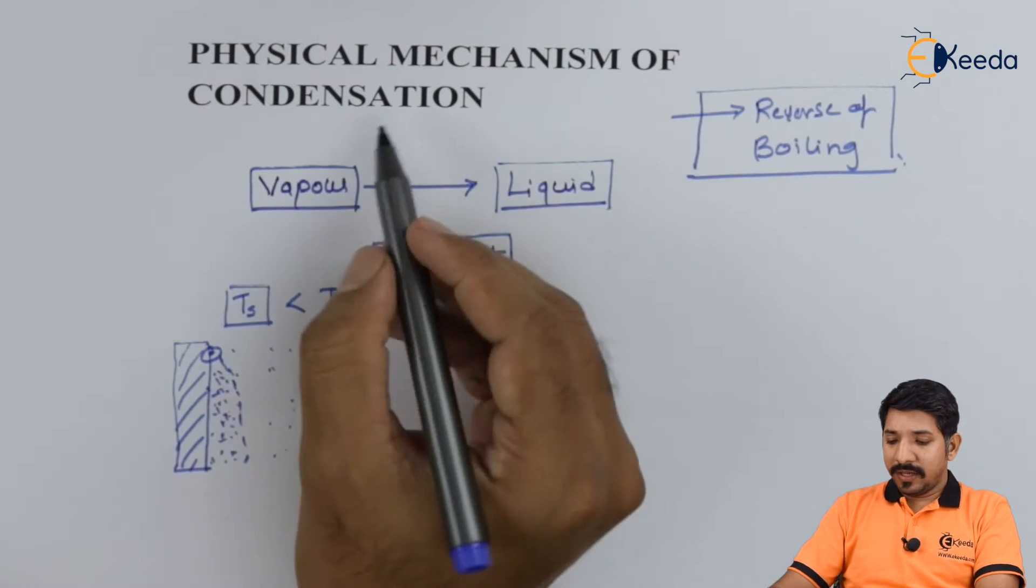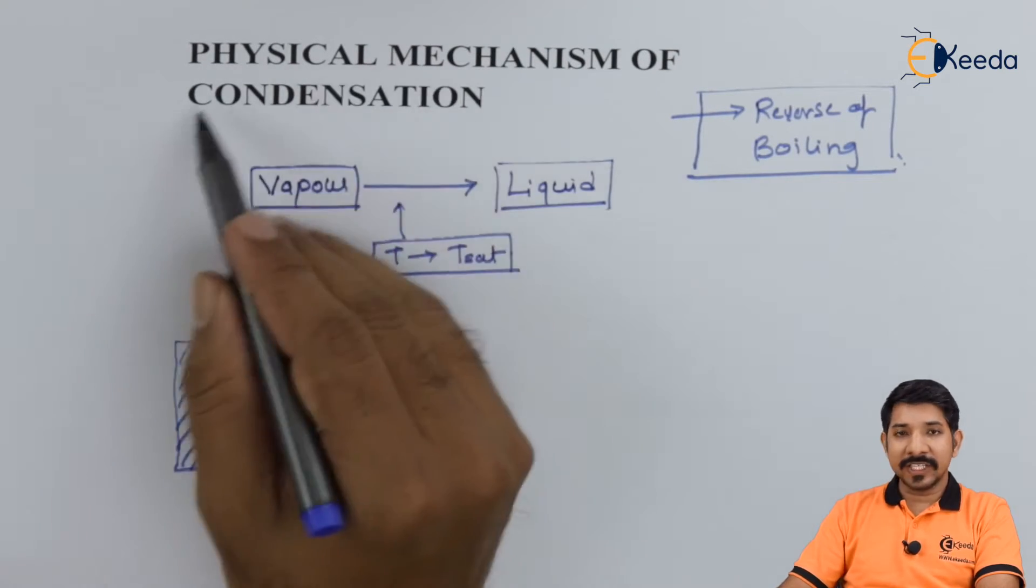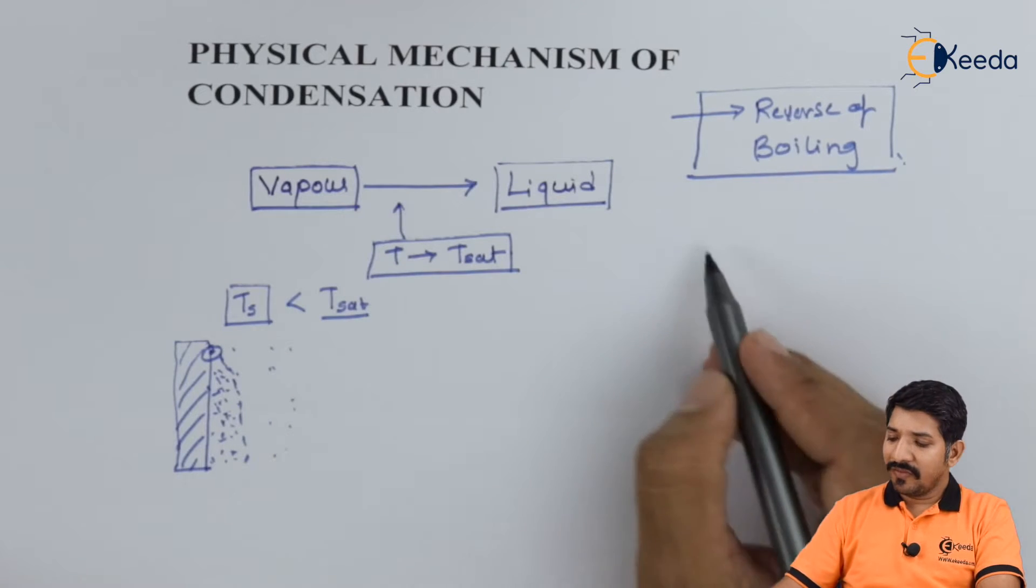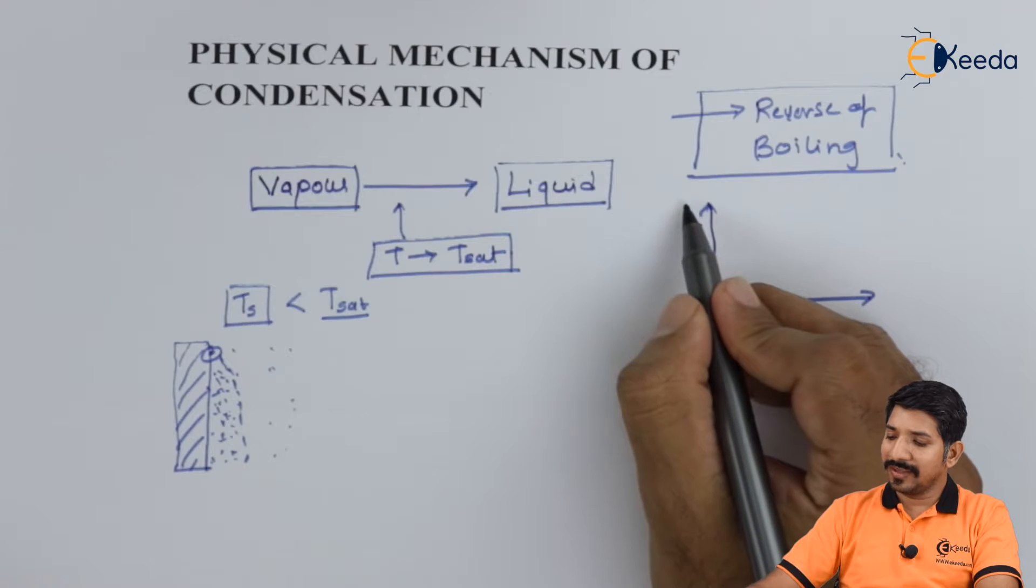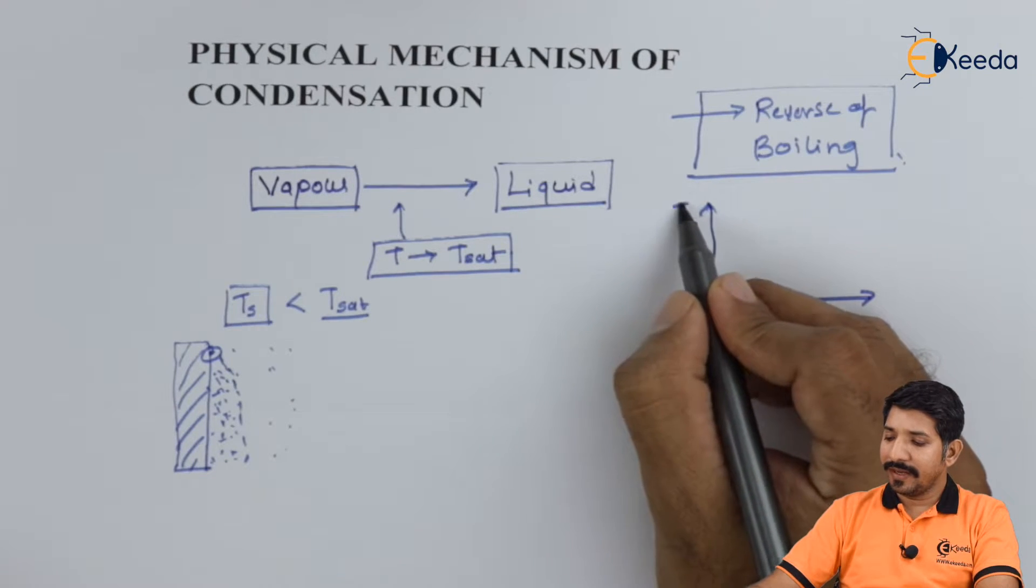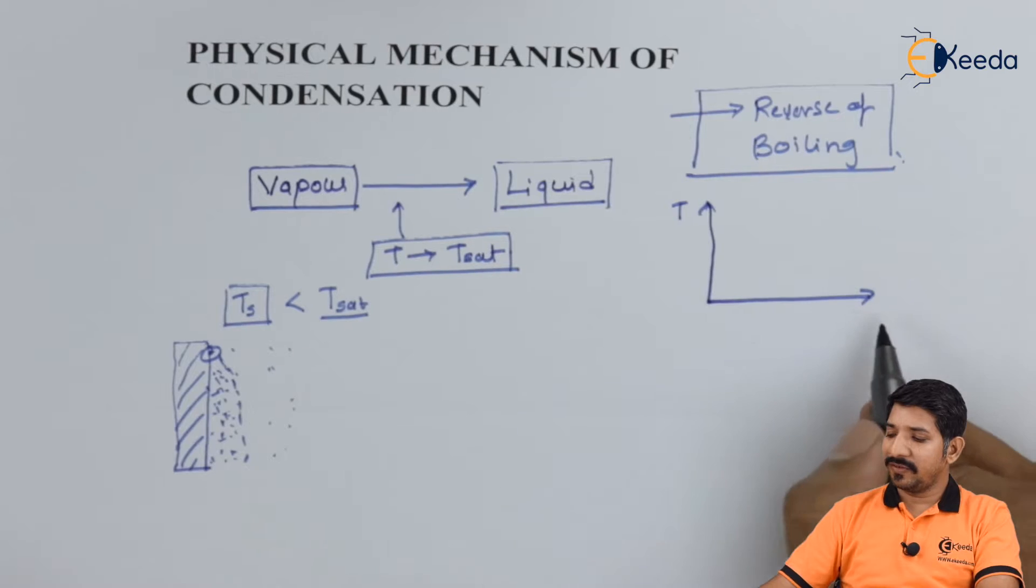The basic definition of condensation: as we have seen for boiling, we have drawn this diagram previously where on the y-axis we have temperature and on the x-axis we have h or q.